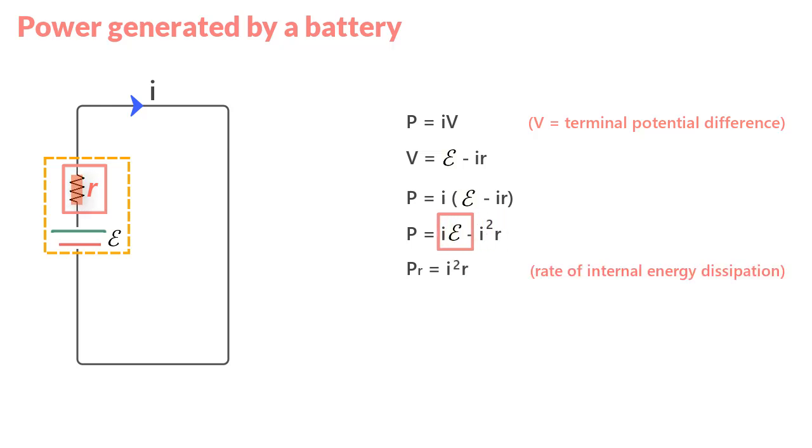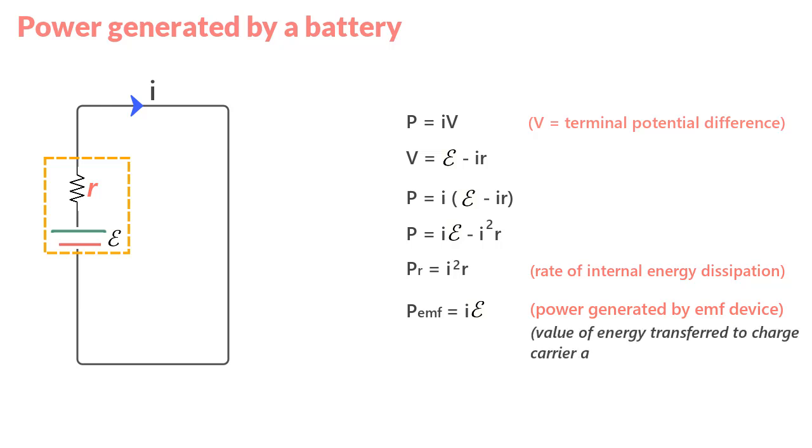In that case, this part of the equation or rather this expression must be the total rate of energy transfer by the battery and let us call it P EMF. So P EMF is value of energy transferred both to charge carrier and the internal resistance of the battery.